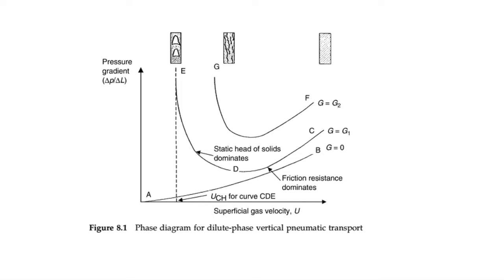Line CDE represents a stream of low solid concentration, G1, which is characteristic of dilute phase transport. Point C occurs when there is a high gas velocity. At point C, the main cause of pressure drop is due to friction between the gas and the wall.